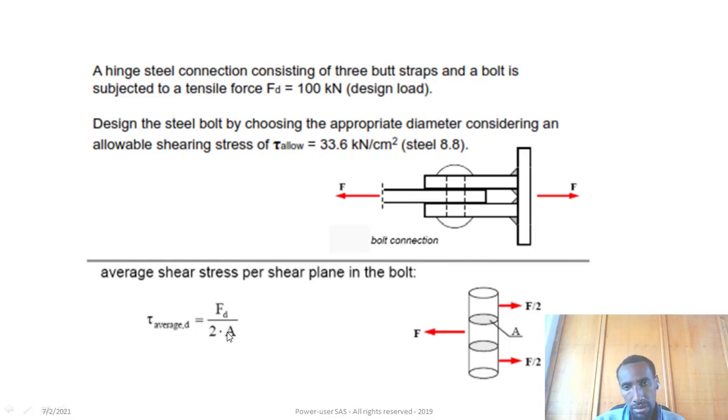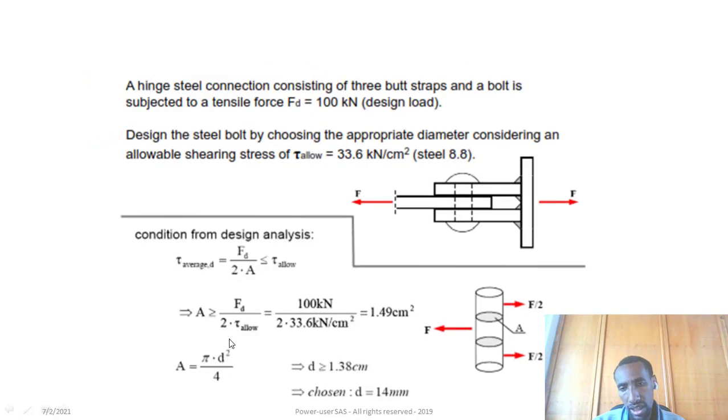The bolt cross section has two shear planes, so the force is divided into two areas. The shear stress is either the total force divided by two areas, or the force F over 2 divided by one area A. So τ_average = F/(2A). The applied force is resisted by two cross sectional areas of the bolt.